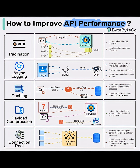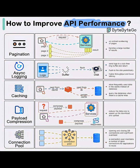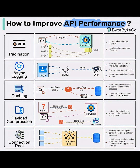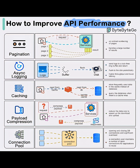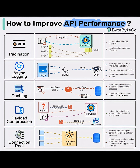4. Payload Compression. Compresses both request and response payloads to reduce size. This enables faster transmission and lower bandwidth usage — especially useful for large JSON or XML data.